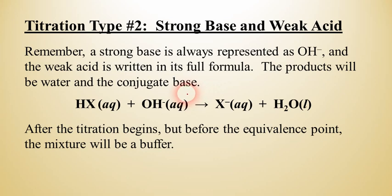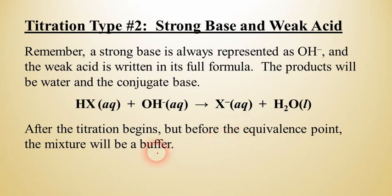Something important to remember is that after you start the titration but before the equivalence point, the mixture is going to be a buffer. So we do have a little shortcut because we can actually use the Henderson-Hasselbalch equation to figure out the pH of that. If you don't know what that is, you can watch one of my previous videos that talks about that.